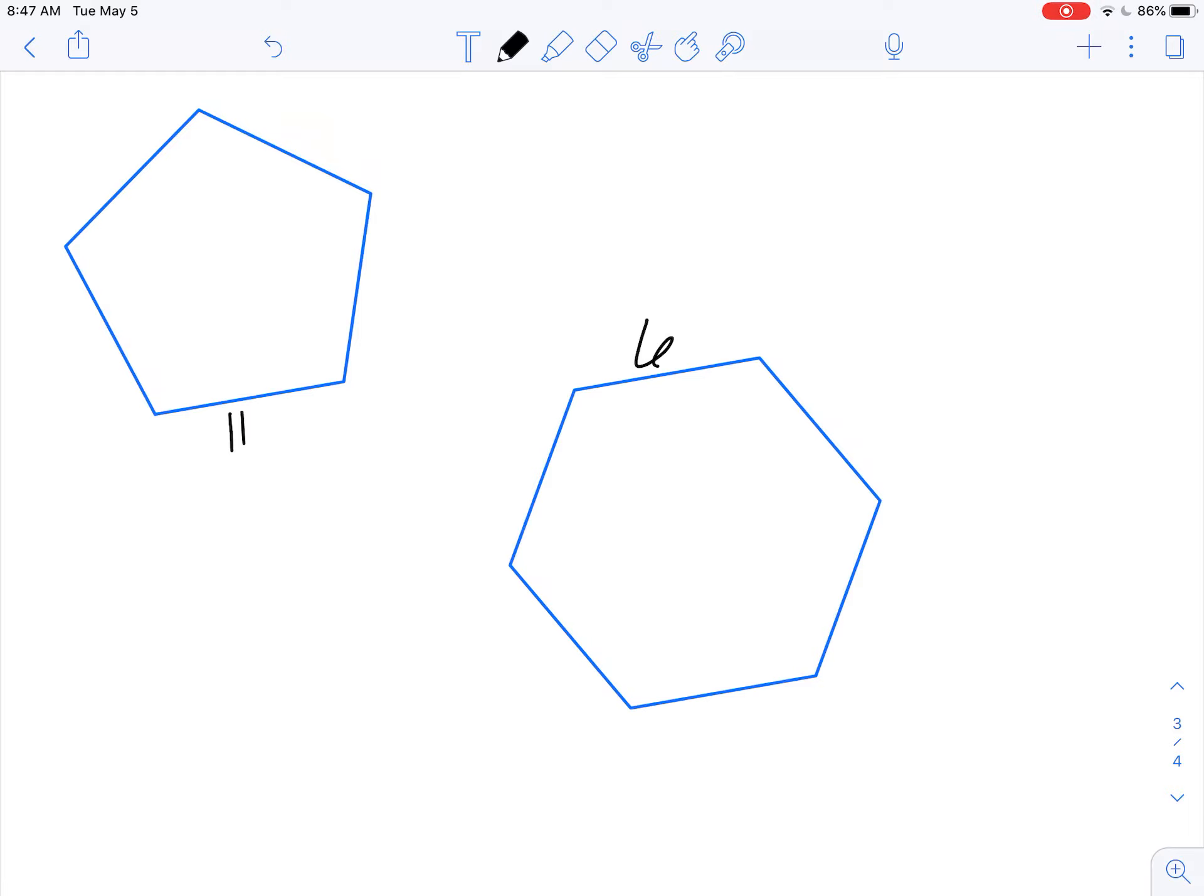So what we're going to do is look at what we're given. We're given the side length, and here's a pentagon with five sides, and here's a hexagon with six sides.